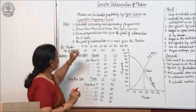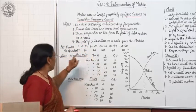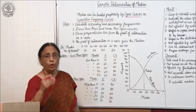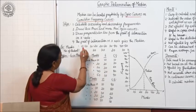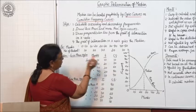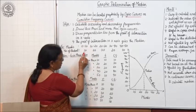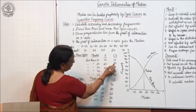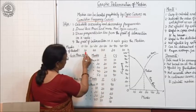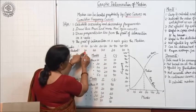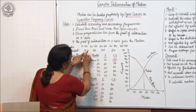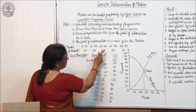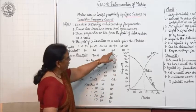Now with this data, calculate the median following these steps. For the less-than ogive, arrange frequencies in ascending cumulative order. Less than 10 is 10; less than 20 is 10 plus 20, which is 30; less than 30 is 60; less than 40 is 80; and less than 50 is 90. You keep adding each frequency to get the cumulative totals.